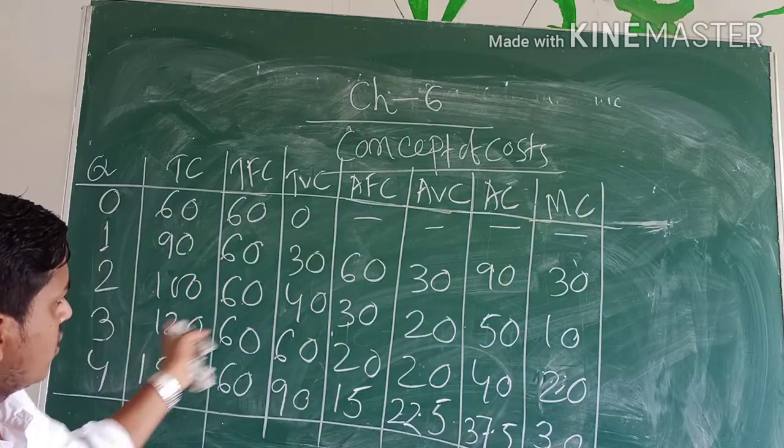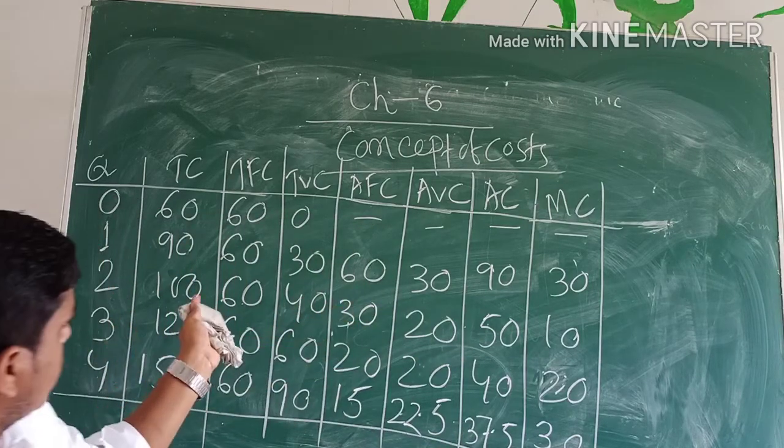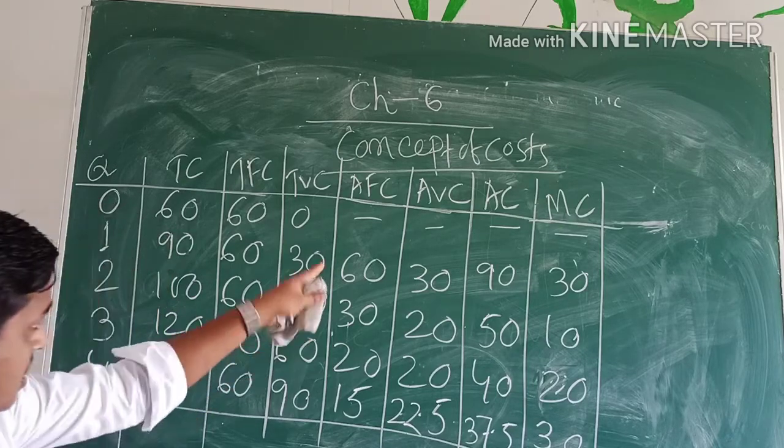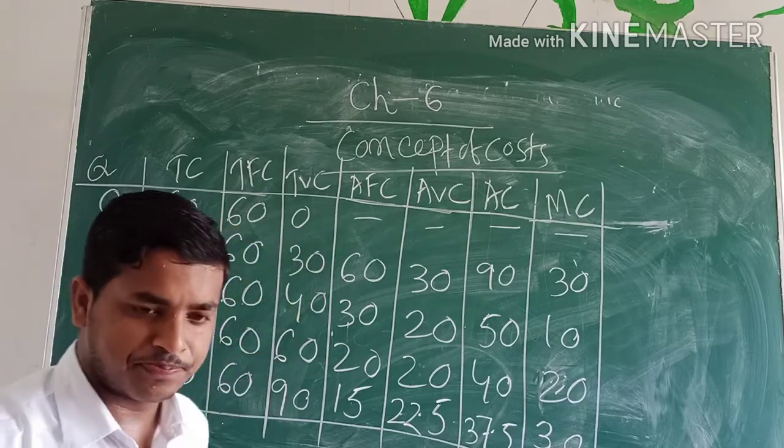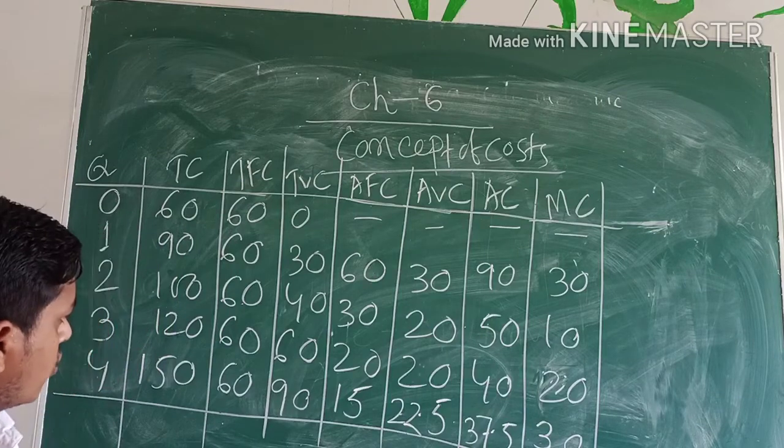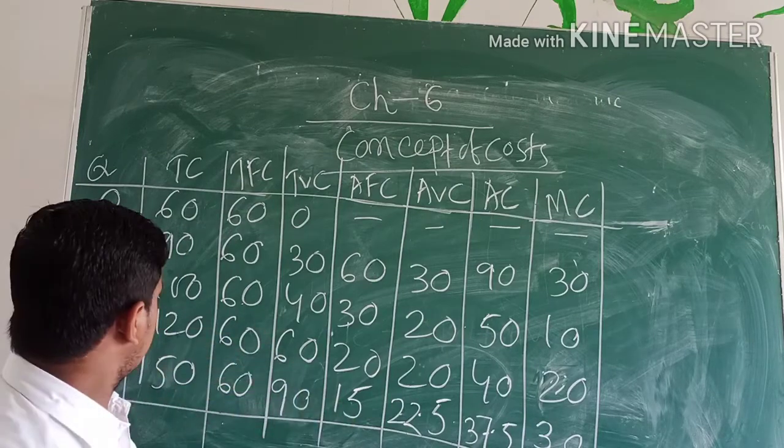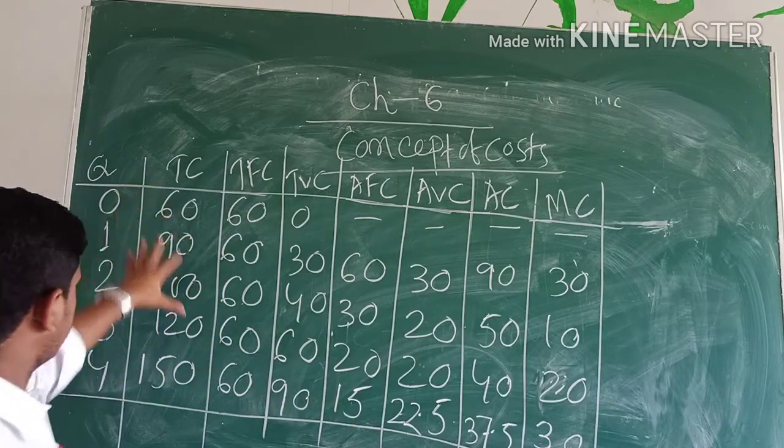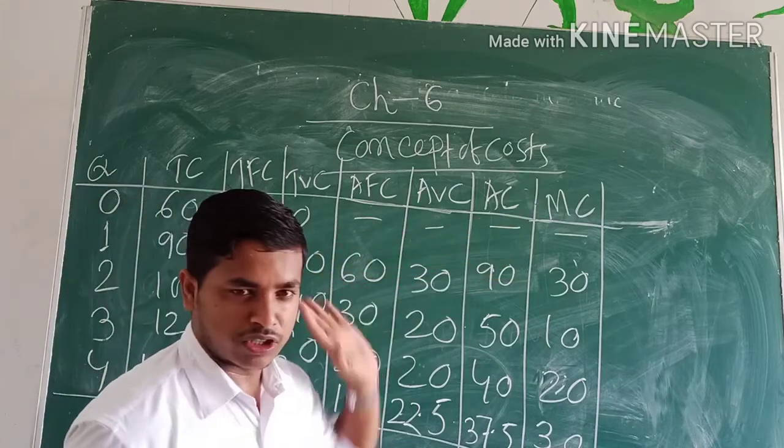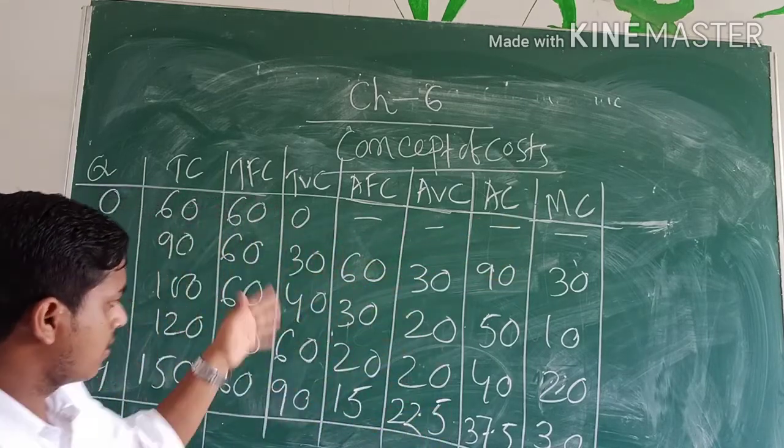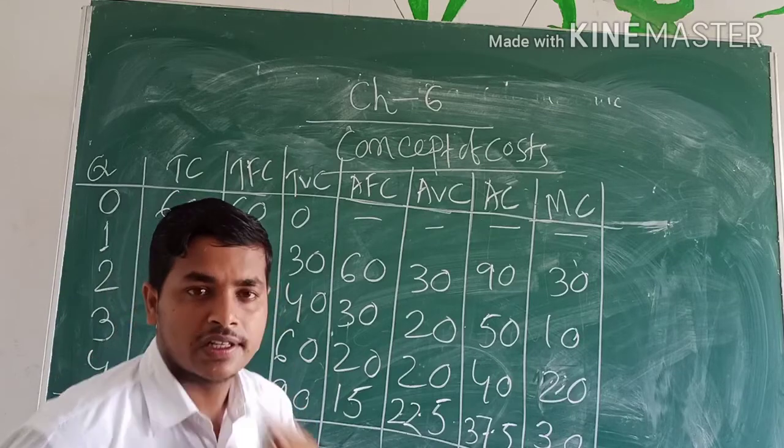So we can easily find out TFC, TVC, AFC, AVC, AC and MC by applying those formulas which we have discussed. If you know TC, TFC, TVC, AFC, AVC, AC, MC, you can calculate them from the given data. Okay, thank you.